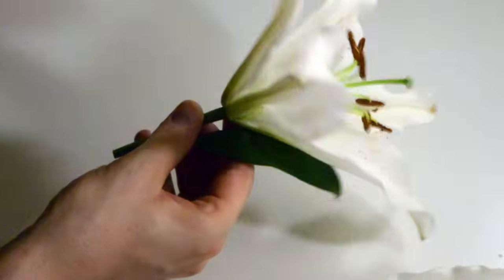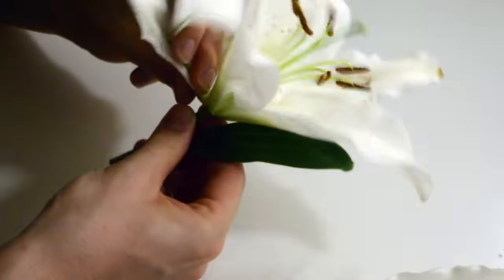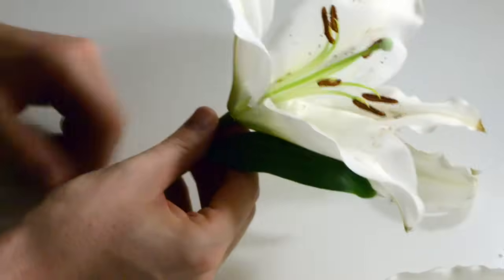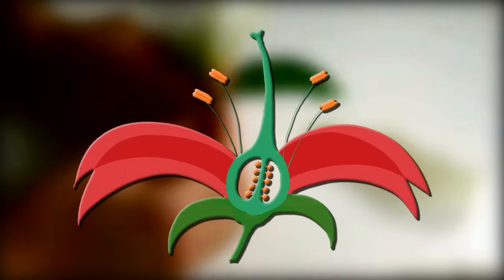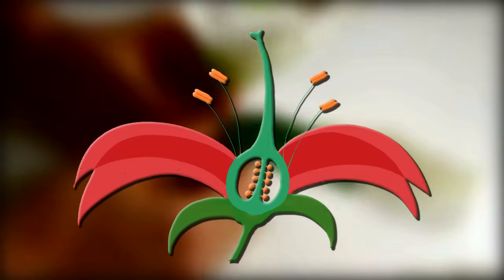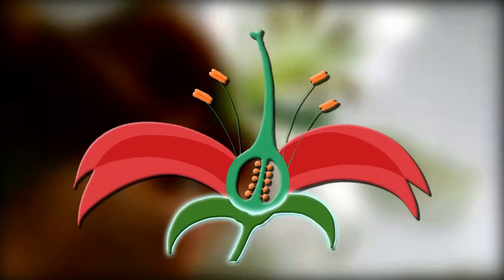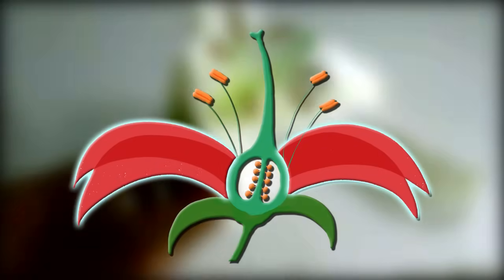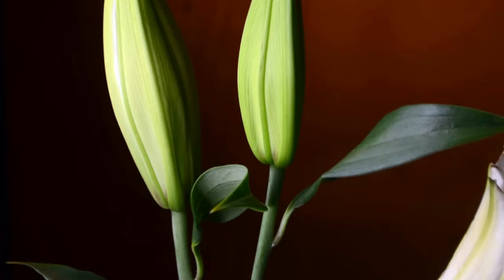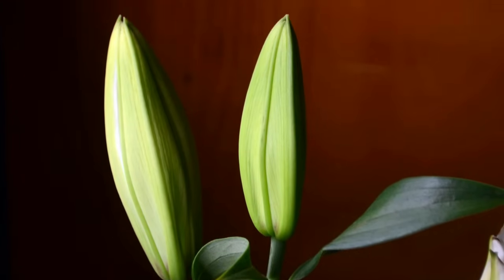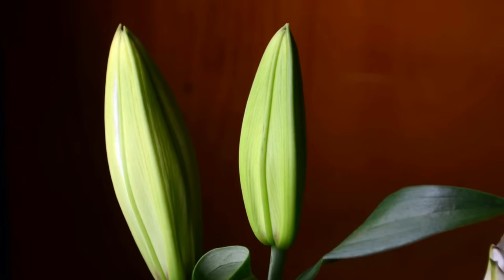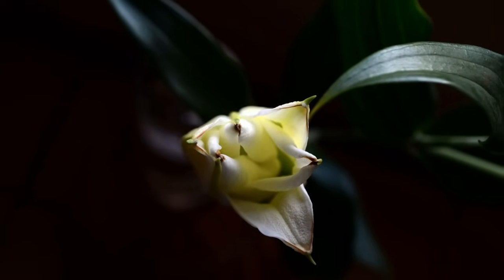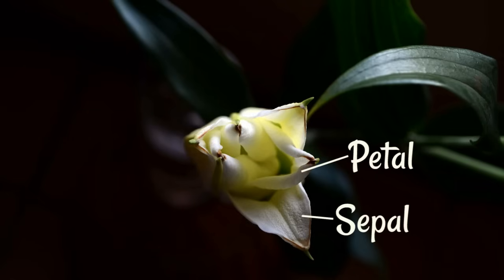We can see on this diagram there is the stem, the receptacle at the top, and the sepals are sticking out either side in green. The petals are above them and they're brightly colored to attract insects. You can see the sepals are green on the bud of the flower, but in the earlier stages of it starting to bloom they are the same color as the petals.